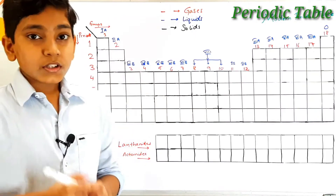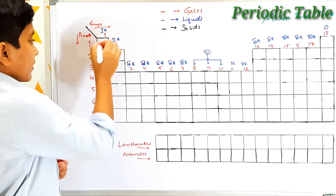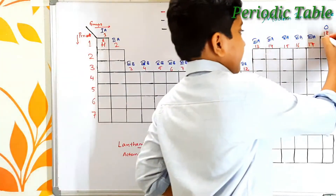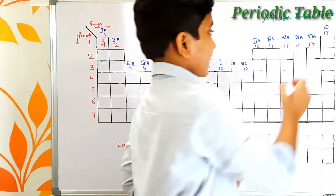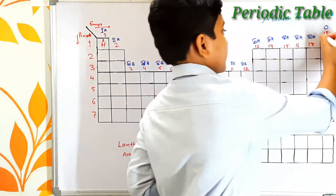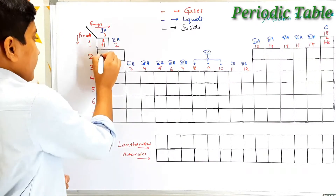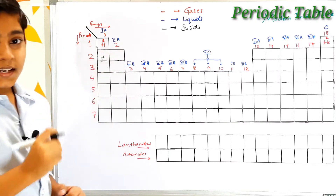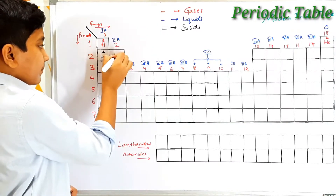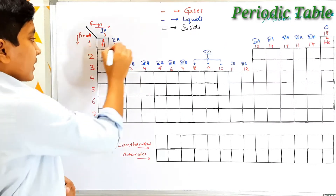The first element is hydrogen, as we all know, its atomic number is 1. After that we find helium — its symbol is He and its atomic number is 2. Now coming to the second period, it begins with lithium — its symbol is Li and its atomic number is 3. After that we find beryllium — its symbol is Be and its atomic number is 4.